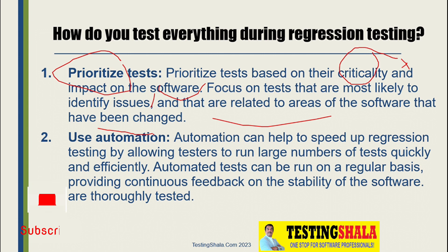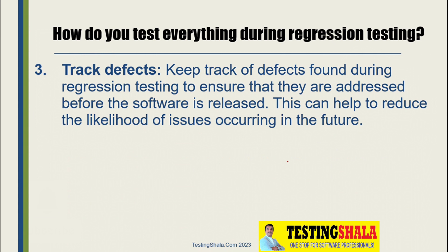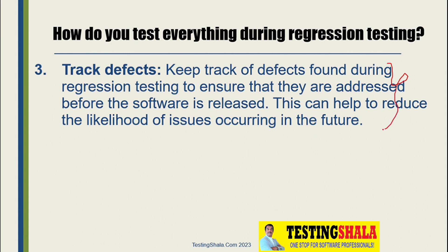The third aspect is that we should look at defects as well. When there are changes to the software, we should see which defects have been fixed and which defects have come into the software. Because of that we are doing this regression testing — if we keep tracking those defects and analyze them, we can identify the right regression test cases, which brings more value to our regression testing.